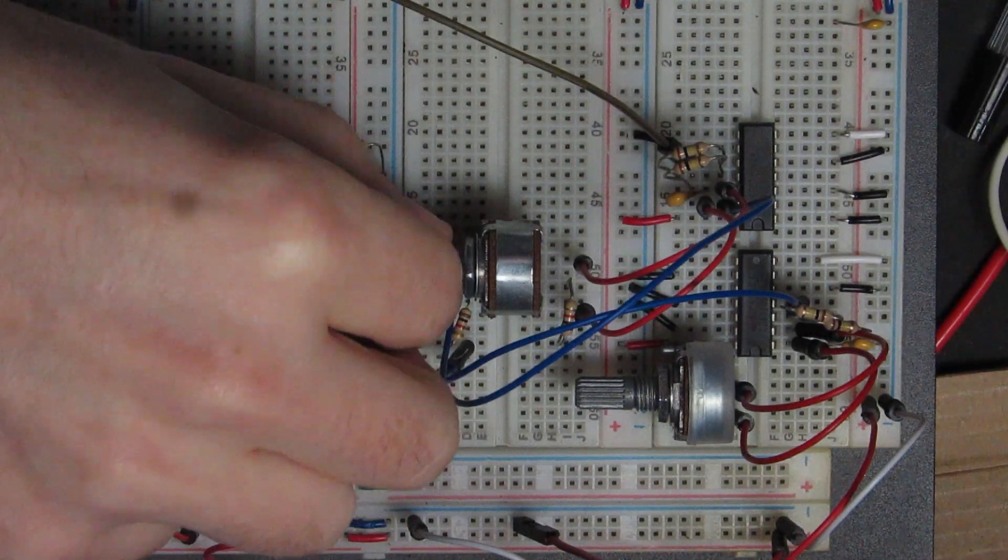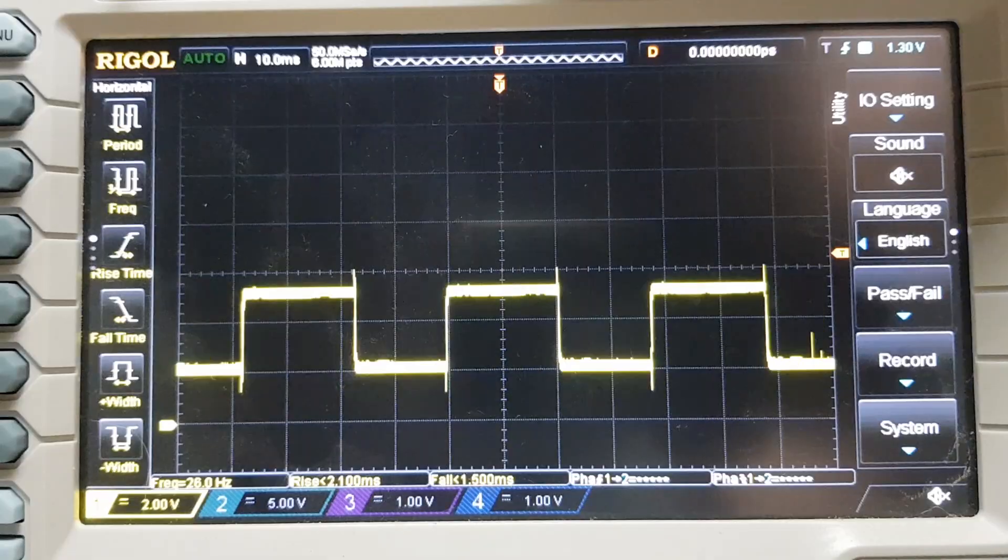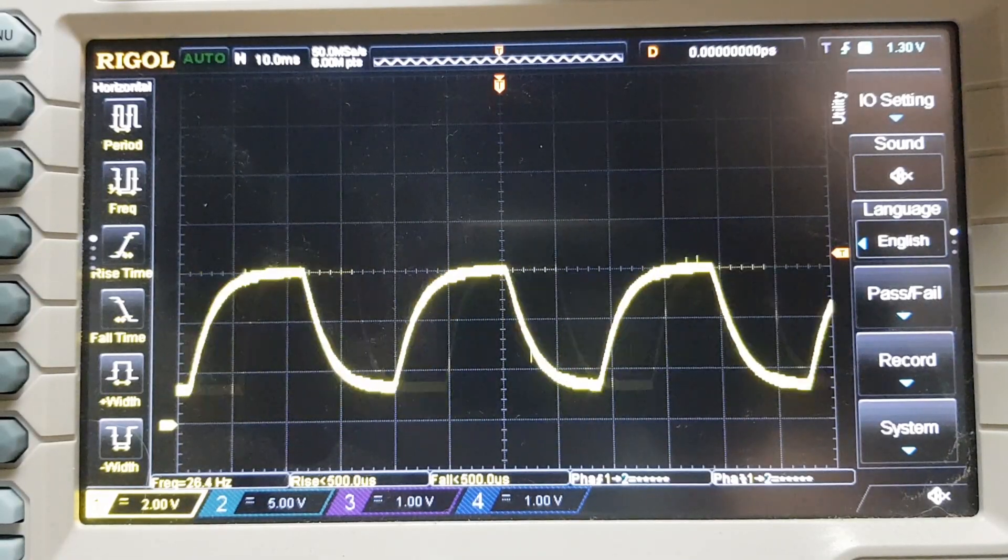Hi guys, thanks for joining me. So this time we're going to build this: a really gnarly sounding active filter that only takes one chip, one capacitor, and a handful of resistors. So stay tuned.